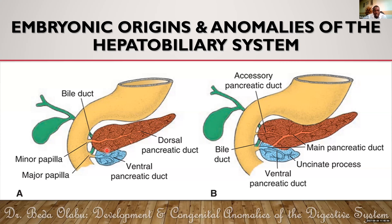Before discussing the ducts, let's consider the derivatives of each bud. The ventral pancreatic bud forms the lower part of the head of the pancreas as well as the uncinate process. The rest of the pancreas — the tail, the body, and the upper part of the head — comes from the dorsal pancreatic bud.